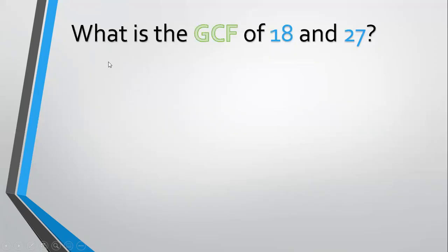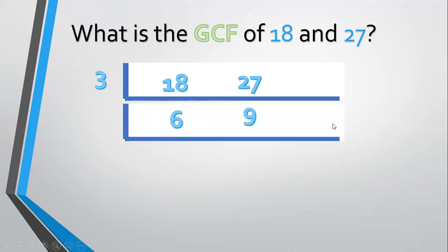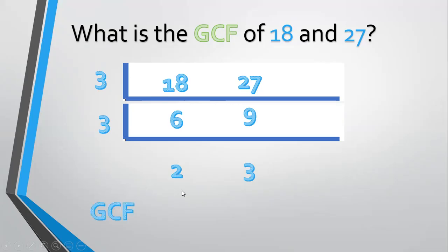Another example, what is the GCF of 18 and 27? Align 18 and 27. Divide by a prime common factor, 3. 18 divided by 3 equals 6. 27 divided by 3 equals 9. Divide again by a prime common factor, 3. 6 divided by 3 equals 2. 9 divided by 3 equals 3. 2 and 3 have no prime common factor, so stop. Then get the GCF: 3 times 3 equals 9.